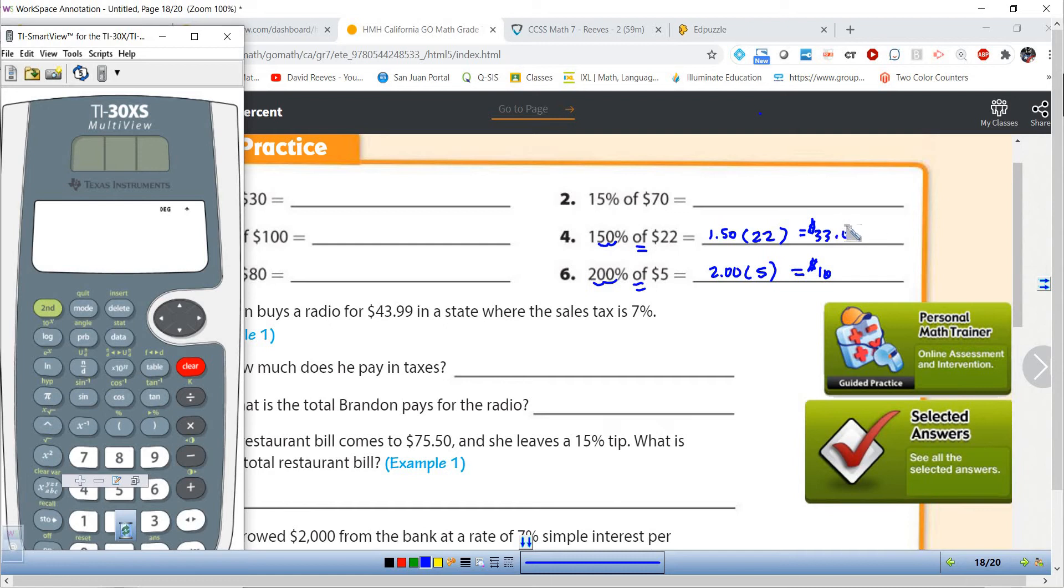Remember this is money, so this would be $33 and this would be $10. If we are going with decimal places, we need to put 2 decimal places always for money. If there are no cents, it's okay just to leave it like 33 and 10. But remember, never go one decimal place with money.